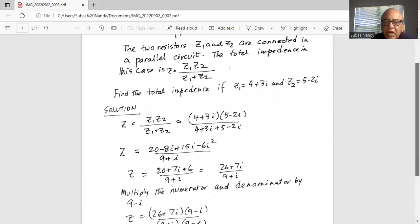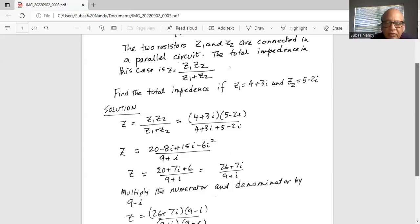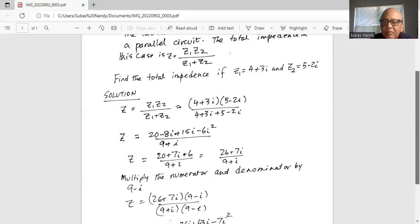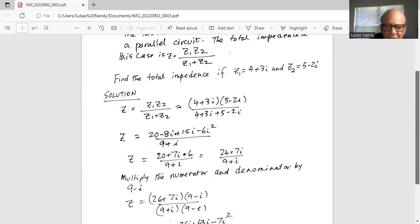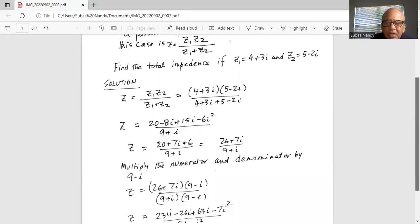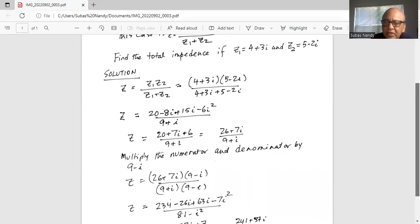So in the numerator, we know i squared is minus 1. So it is 20 plus 15 minus 8 is plus 7i plus 6, because i squared itself is minus 1. So minus 6 times minus 1 is plus 6. So in the numerator, we have 20 plus 6 which is 26 plus 7i divided by 9 plus i in the denominator.